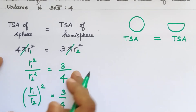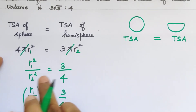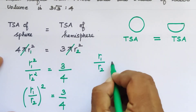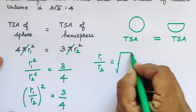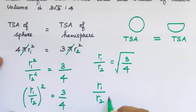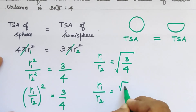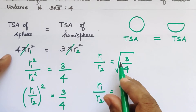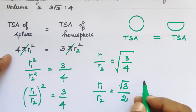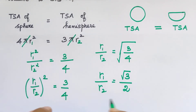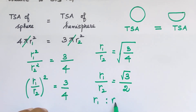Now we remove the square here. So R1 by R2 — with √3 here — we cannot take the square root of 3, so we keep √3. The 4 below has square root equal to 2. So R1 by R2 = √3 : 2, which means R1 is to R2 = √3 : 2.